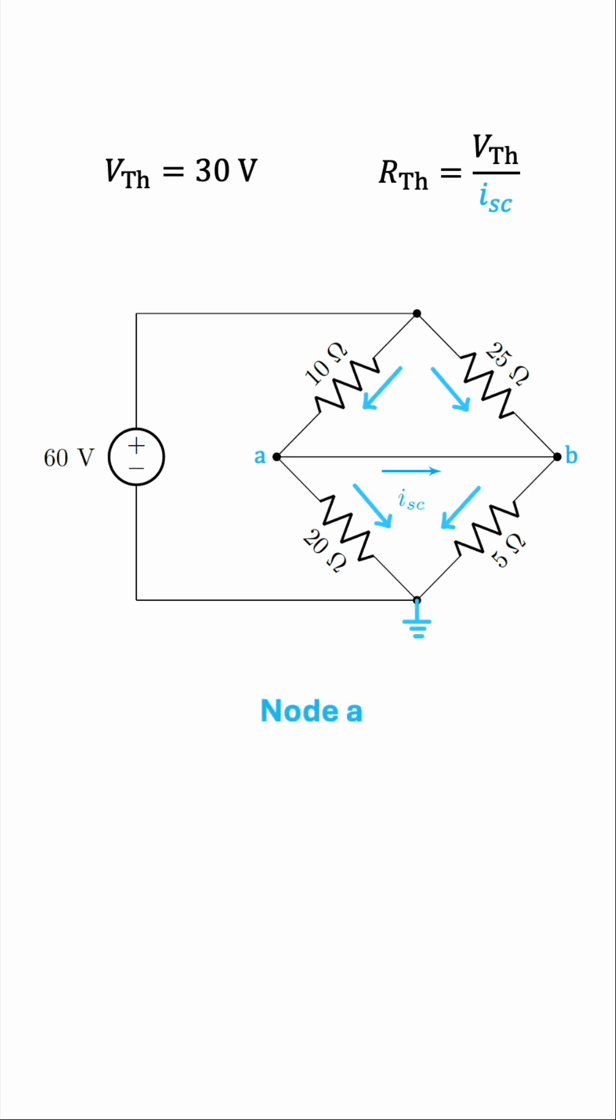At node A, we have the current entering is 60, the top node, minus VA over 10. We have I short circuit leaving, and we also have VA minus 0 over 20. Let's clear the denominators by multiplying everything by 20. So this is the equation at node A, we can move negative 2VA to the other side, and we have 20 I short circuit plus 3 VA equals 120. Good.